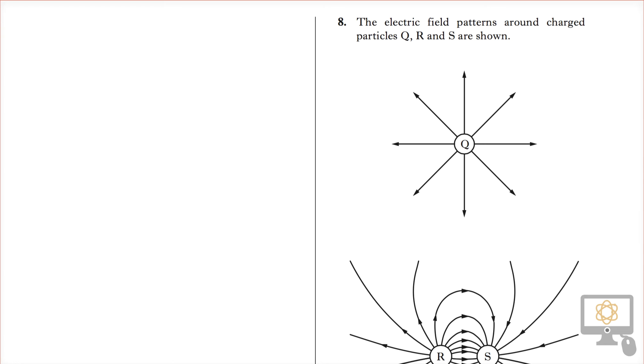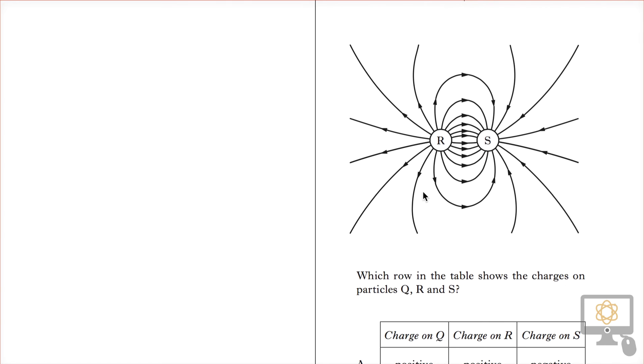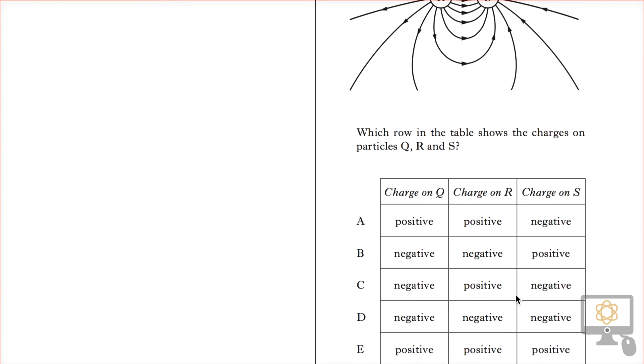Look at question number eight from the 2014 revised higher physics paper. It shows a couple of charges. The electric field patterns around charges Q, R, and S are shown. So this is charge Q, and then R, and S is down here. Which row in the table shows the charges on particles Q, R, and S?